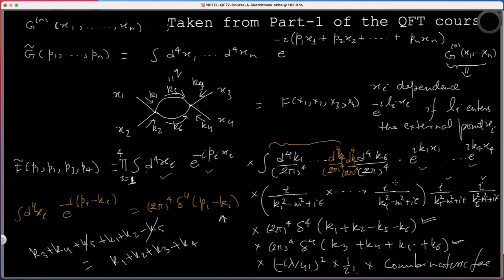Recall what we studied: you label each propagator by some momentum k_i. In this case you have six propagators, so you have to integrate over all six. At each external point you include a factor e^{-i} times the momentum entering that external vertex, times x_i. Here minus k1 is entering into x1, so you get e^{+ik1·x1} because the sign gets reversed. Then you have propagators, then a momentum-conserving delta function at each vertex.